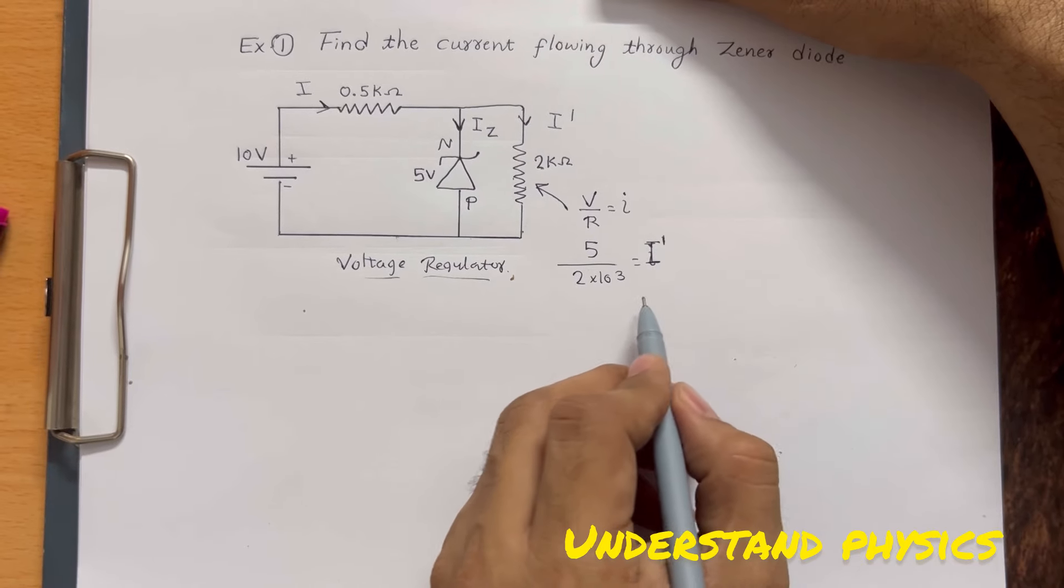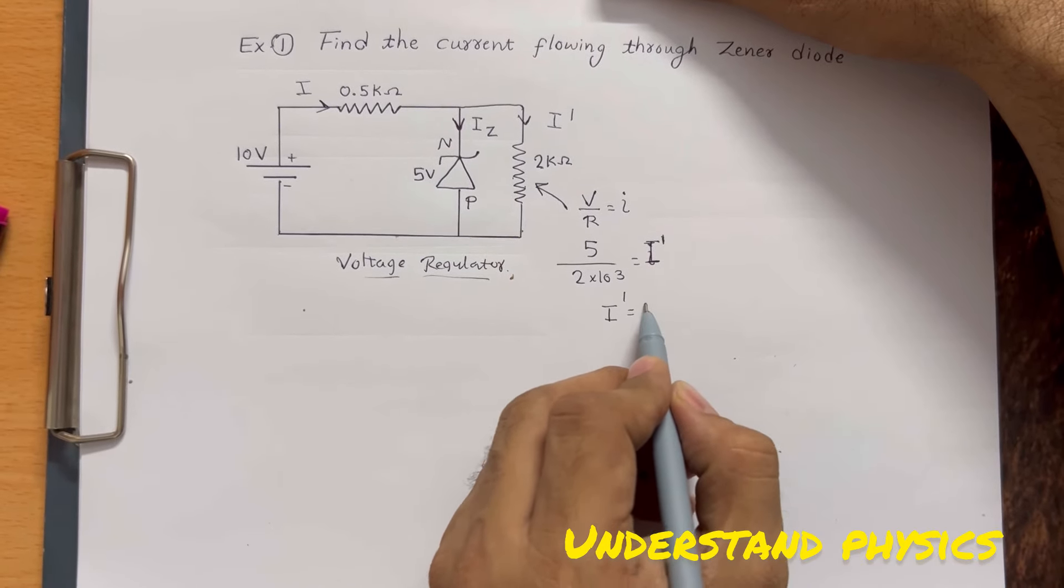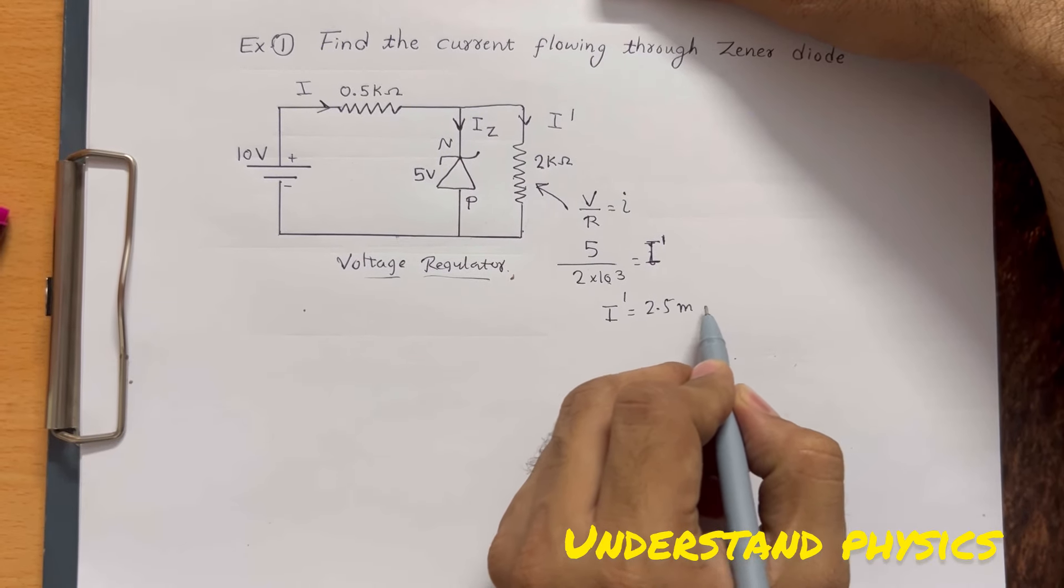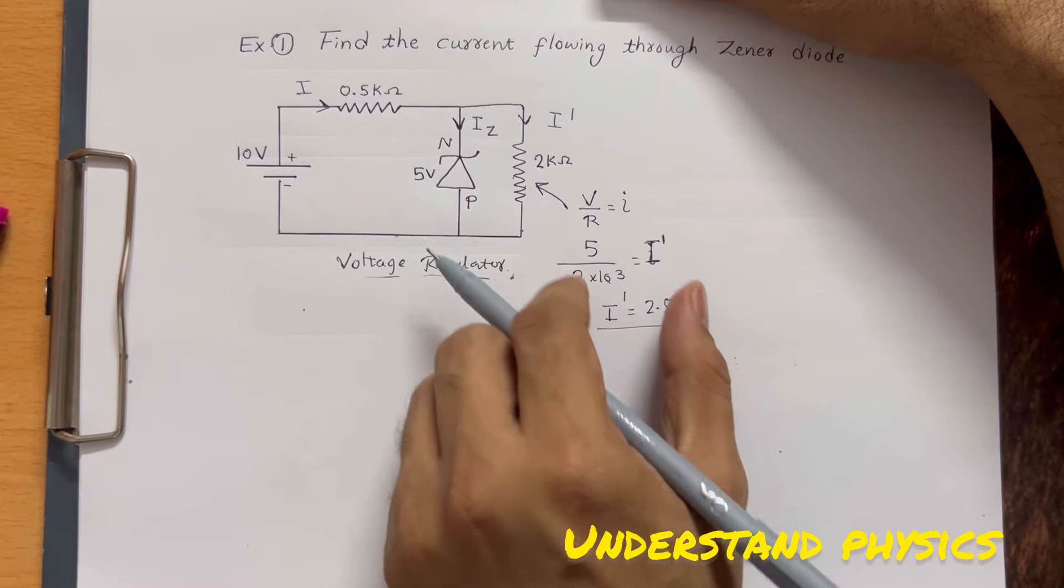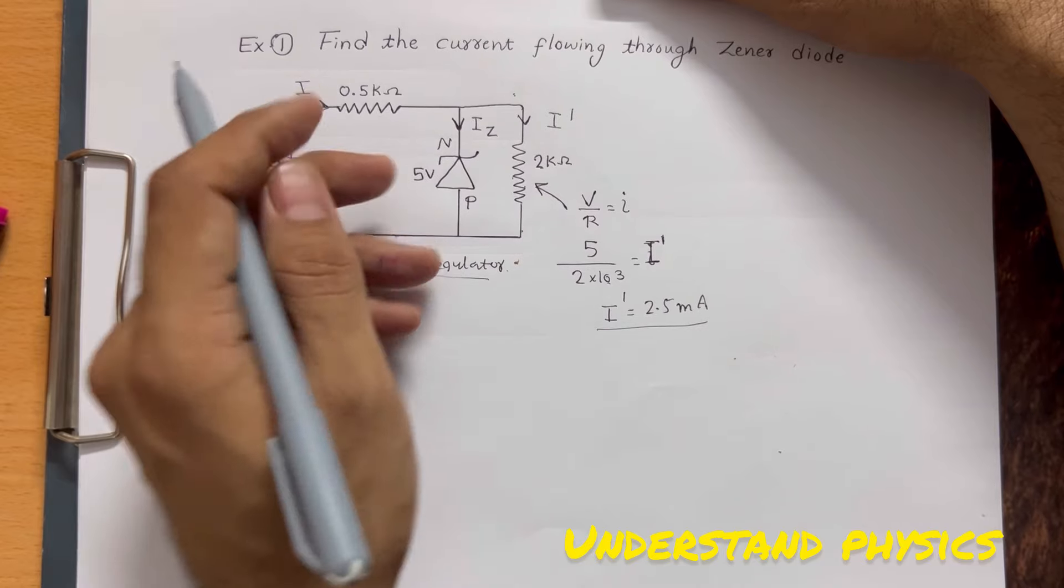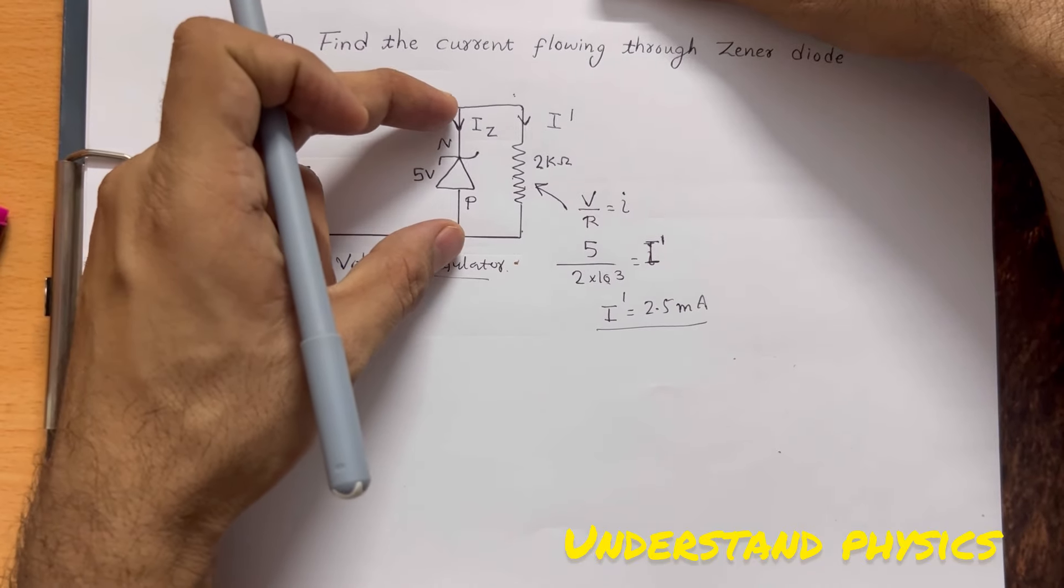So I' comes to 2.5×10⁻³. If you take 10³ in the numerator, it becomes milliamperes. I' is 2.5 mA. So this current is 2.5 mA. Now, if the voltage across the Zener is 5 volts, here also 5 volts will be there.